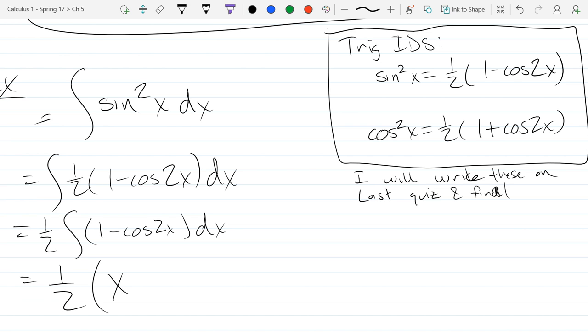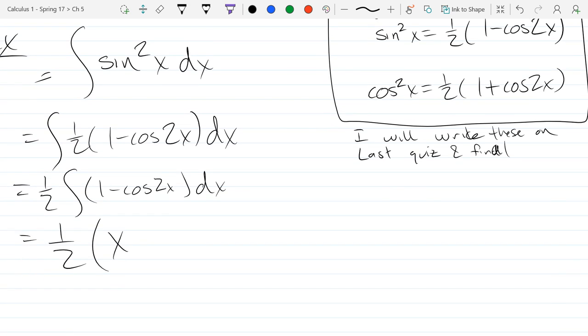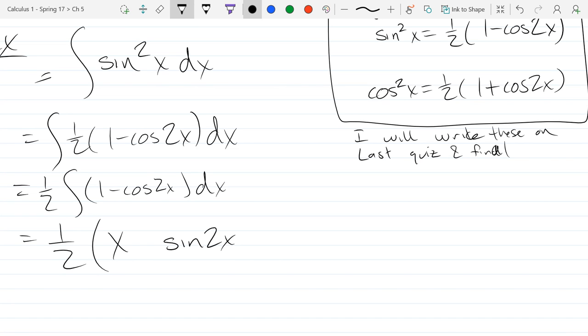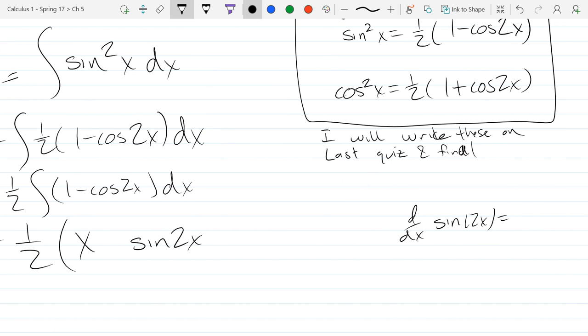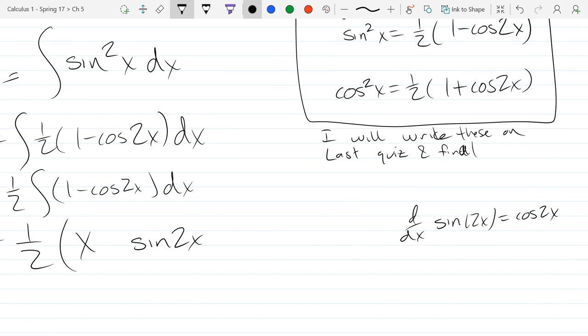You could go u-substitution here, but let's try a guess and check instead. So normally I'd recommend u-substitution, but I'm going to do a guess and check instead. So I'm going to guess and say maybe it's sine 2x. I know it's got to have sine in it. What is the derivative of sine 2x? Cos 2x times what? Times 2 from the chain rule. So there's two problems. There's an extra times 2 and there's a fact that it's positive. So let's fix both of those.